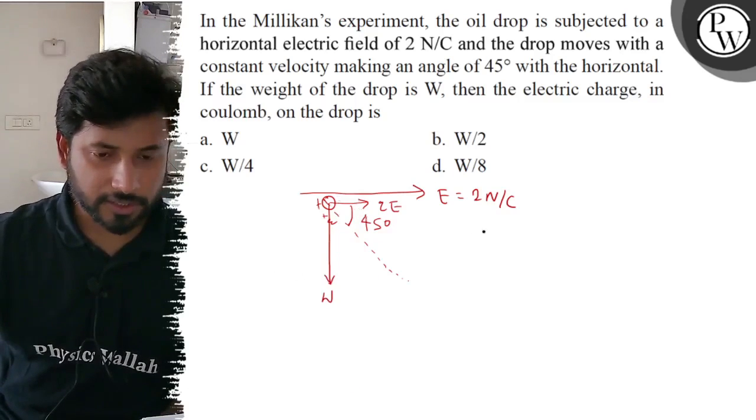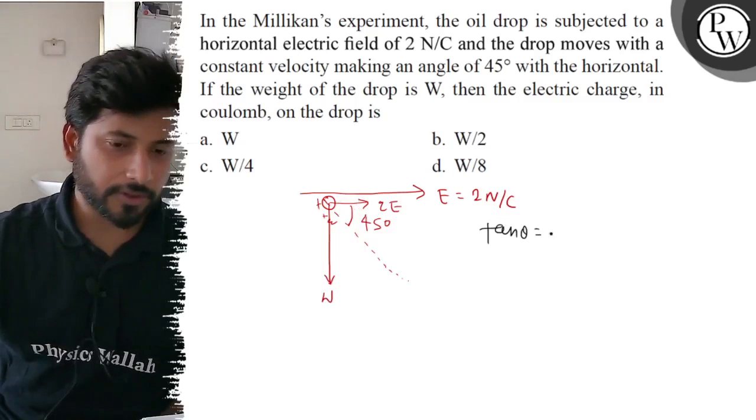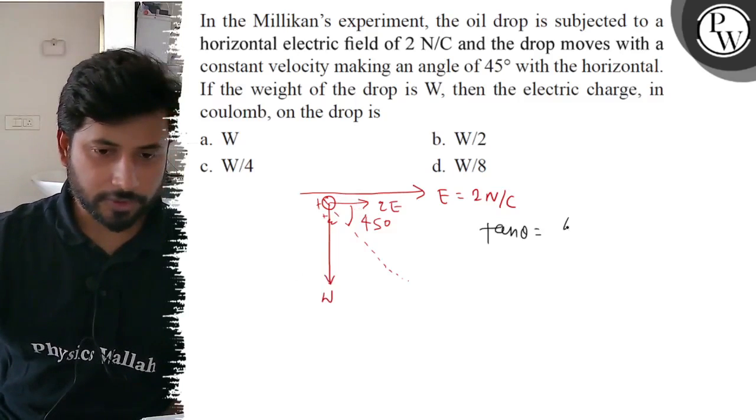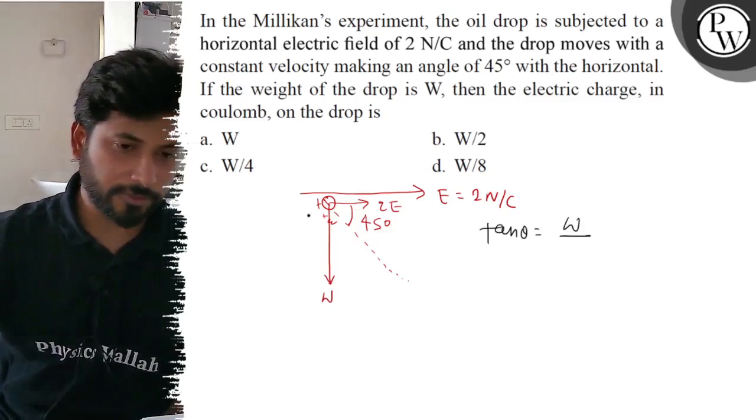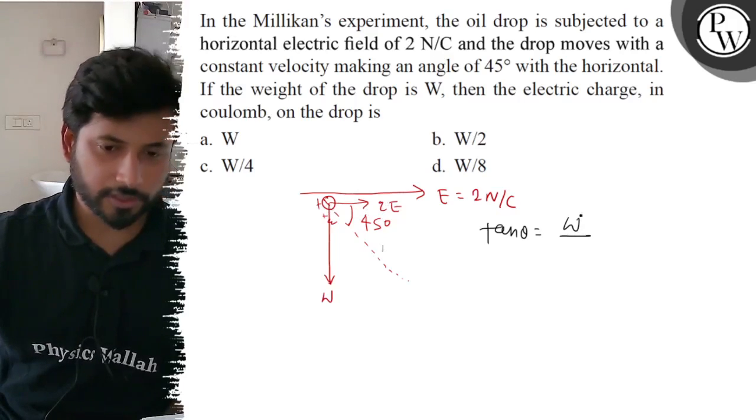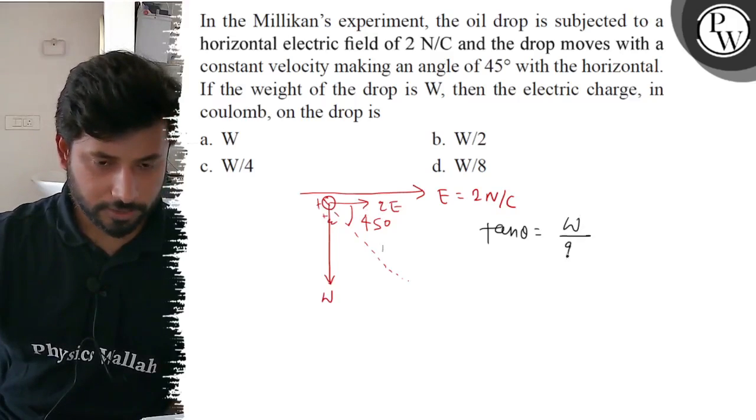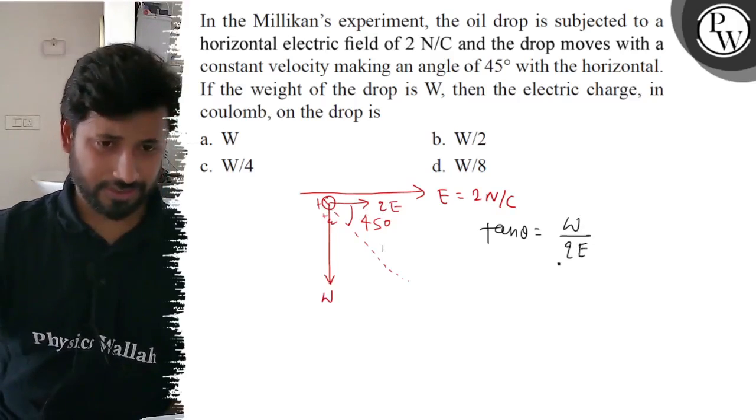In this triangle, you can see tan θ equals W upon QE. Perpendicular upon base - this is the perpendicular and it is W, and the base is QE. So W by QE.